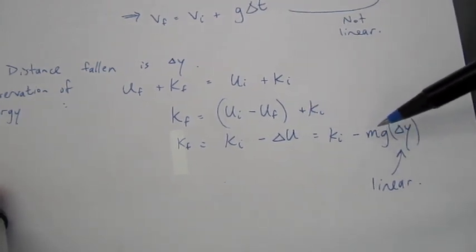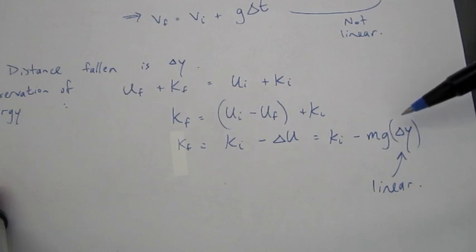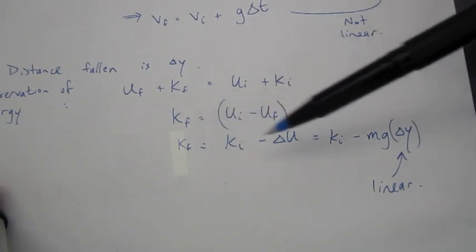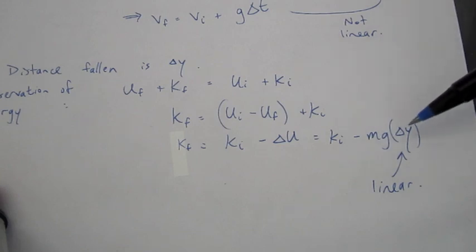So that looks like minus mg times delta Y, where delta Y is the distance fallen. So the kinetic energy is linearly related to delta Y.